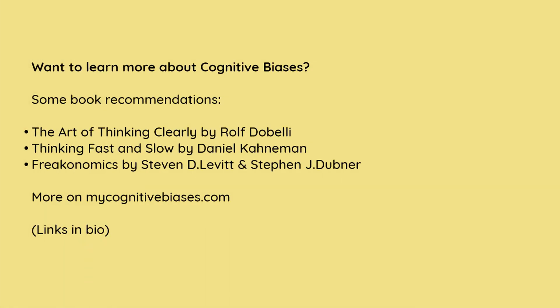Want to learn more about cognitive biases? Some book recommendations: The Art of Thinking Clearly by Rolf Dobelli, Thinking Fast and Slow by Daniel Kahneman, and Freakonomics by Stephen D. Levitt and Stephen J. Dubner. More on MyCognitiveBiases.com.